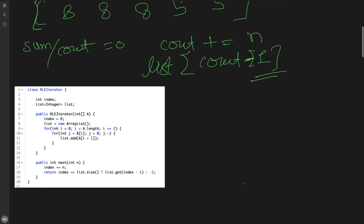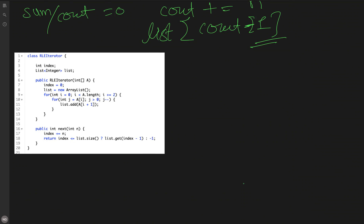Here is the code for this approach. We create a list and populate it: for even indices i in the encoding array, we run a nested loop for the frequency value at encoding[i], adding encoding[i+1] that many times to the list. In the next method, we update the index by n, and if it crosses the total number of elements, return minus one; otherwise return the value at index minus one.